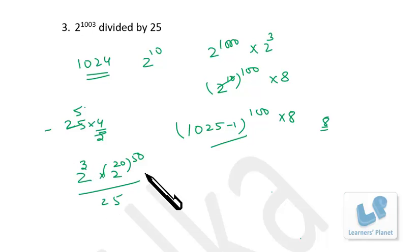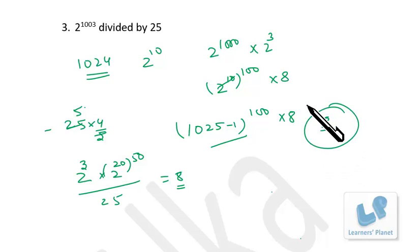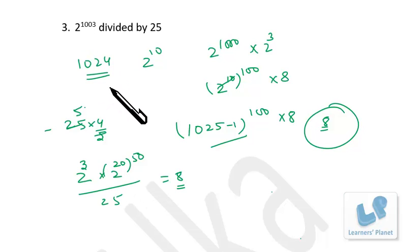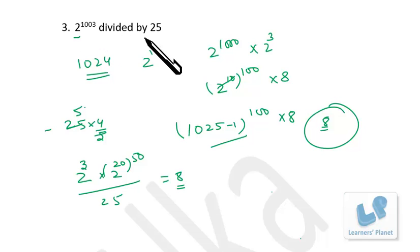We are left with just 2 raised to 3, so the answer is 8. Now we have two different methods to solve the same problem. Sometimes if the power is very big or the base and divisor are co-prime to each other, you can use Euler's function to solve the problem.